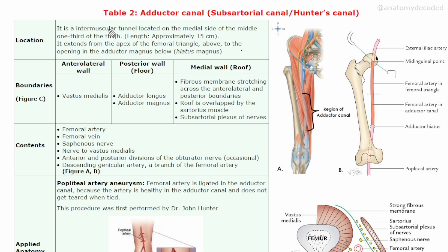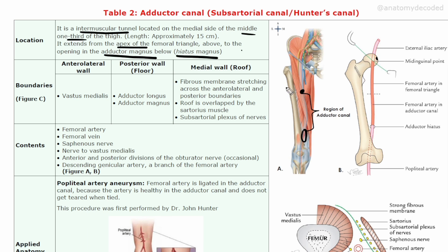The adductor canal is an intermuscular tunnel in the middle one third of the thigh. It extends from the apex of the femoral triangle to the opening in adductor magnus, called the hiatus magnus, through which the femoral vessels continue as the popliteal vessels.